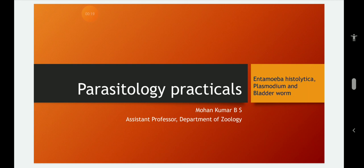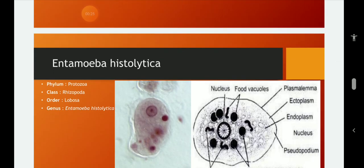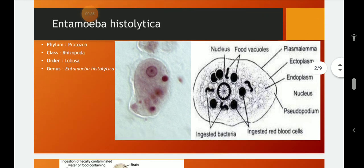Entamoeba histolytica, Plasmodium and Taenia. First one is Entamoeba histolytica which belongs to Phylum Protozoa, class Rhizopoda and Order Lobosa, and our sample or genus is Entamoeba histolytica.